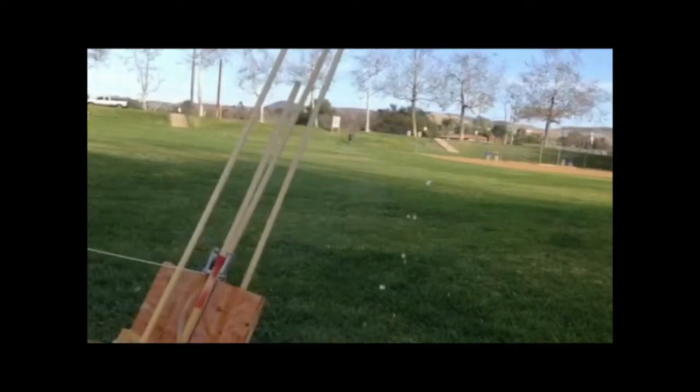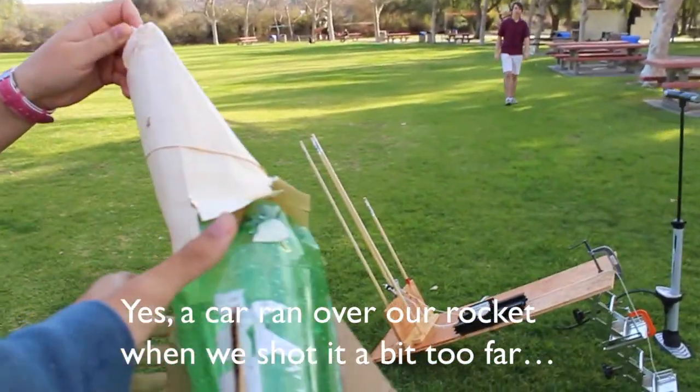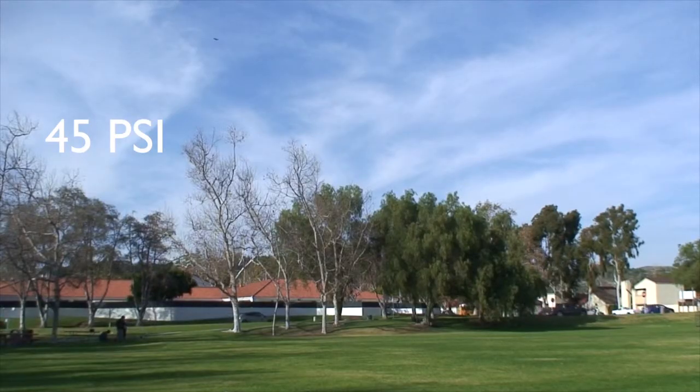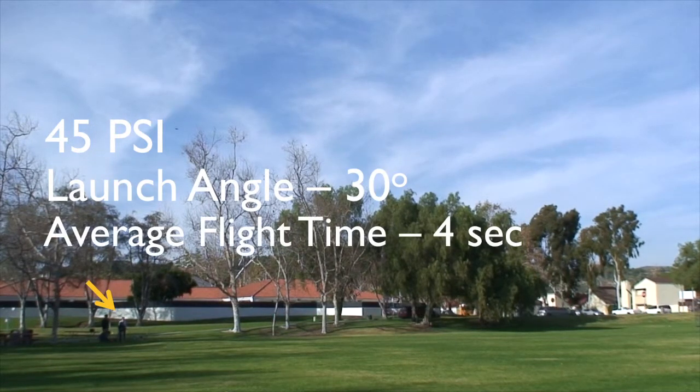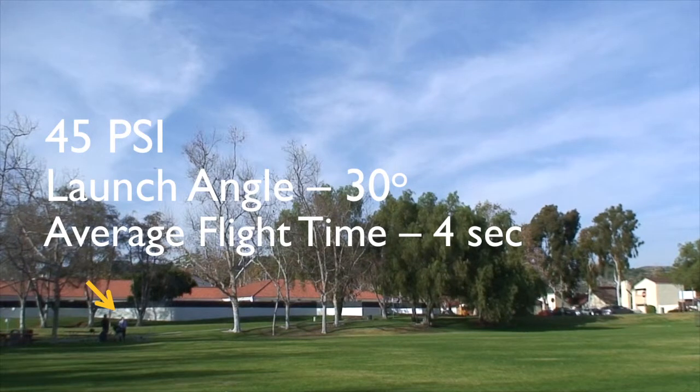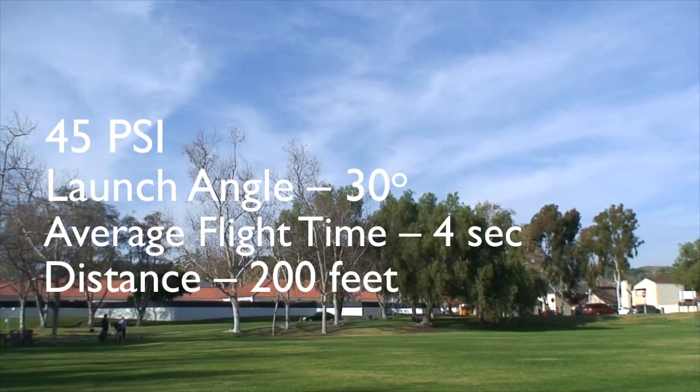Total launches and one crushed rocket later, we have a good idea of the distances and times involved. For each launch, the rocket was filled to 45 psi and the launch angle was set to 30 degrees. On average, the total flight time was roughly 4 seconds. Lastly, we'll use 200 feet as the total distance traveled.